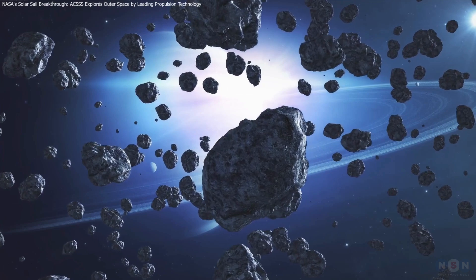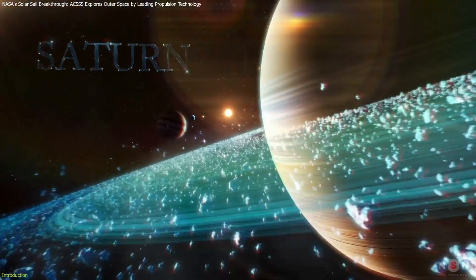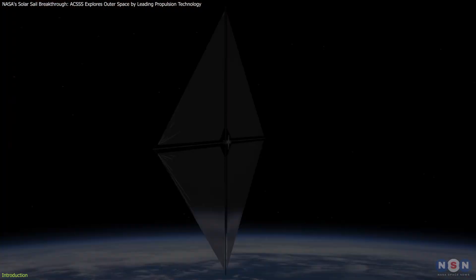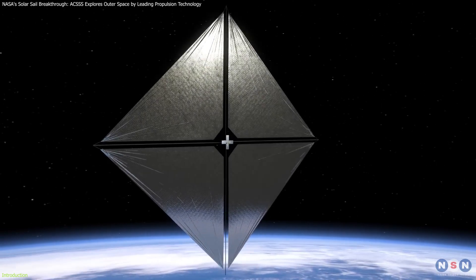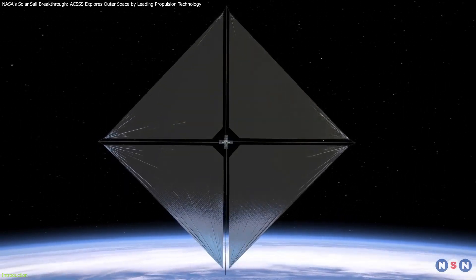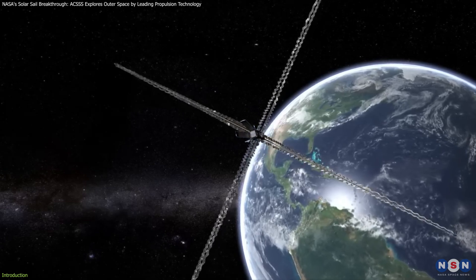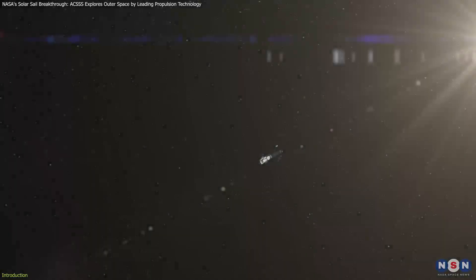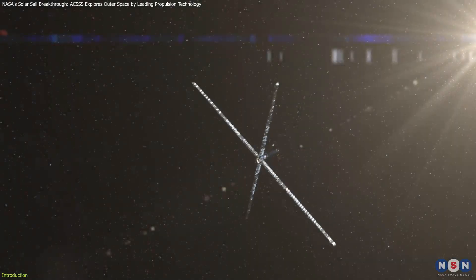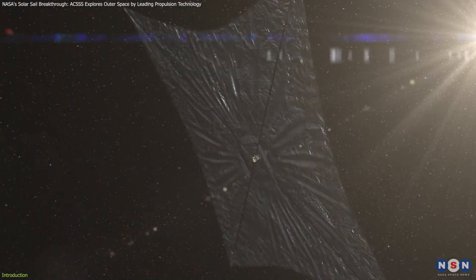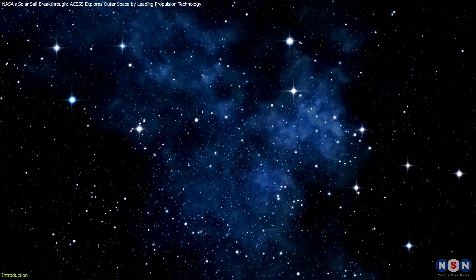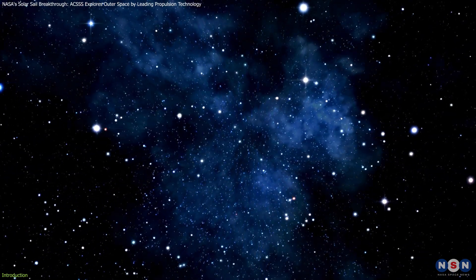We are on the brink of exploring distant asteroids and the outer planets like never before. NASA's Advanced Composite Solar Sail System, ACSSS, is leading the way, having recently achieved a significant milestone by deploying its solar sails in orbit. This breakthrough represents a major step forward in space propulsion technology, opening up new possibilities for deep space missions.